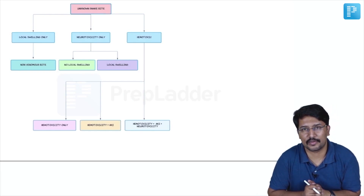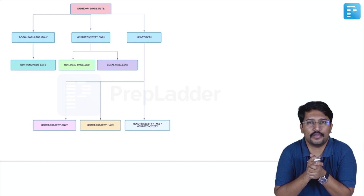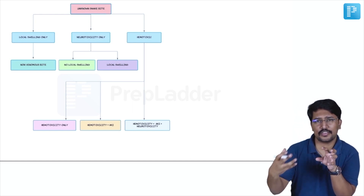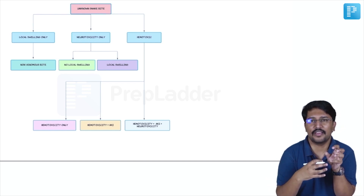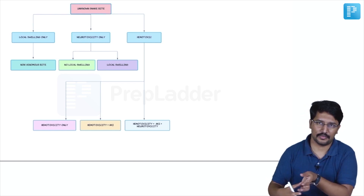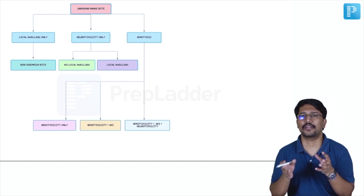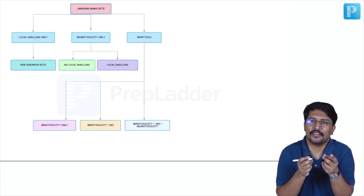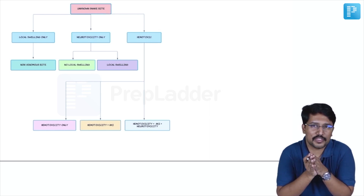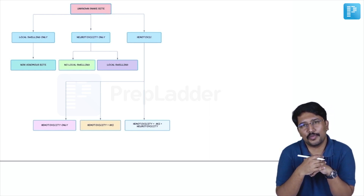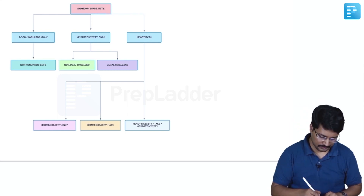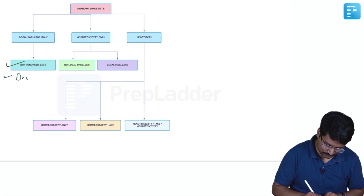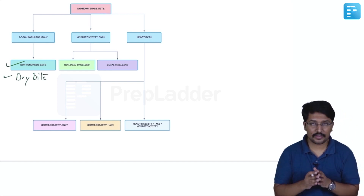This slide talks about the syndromic approach for snake bites. When you get an unknown snake bite, see whether the patient has only local reaction or systemic envenomation. If there is only local reaction, there are two possibilities: either it is a non-venomous bite, or a venomous snake bite that was a dry bite.